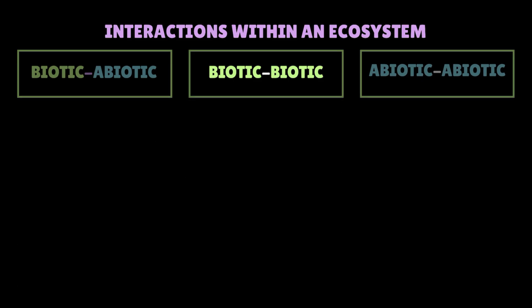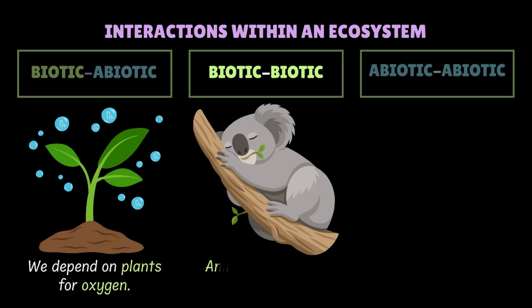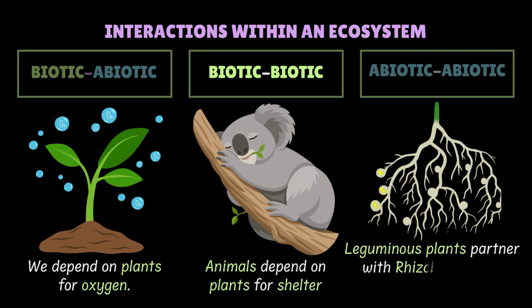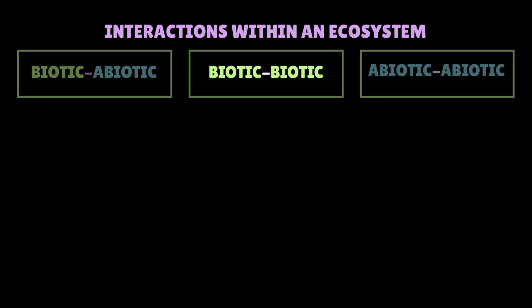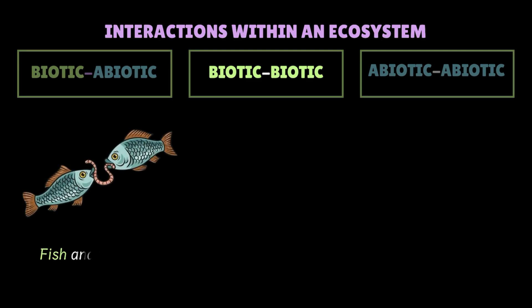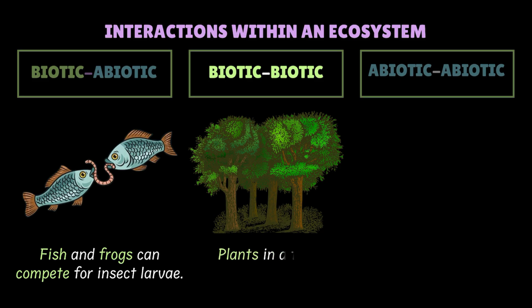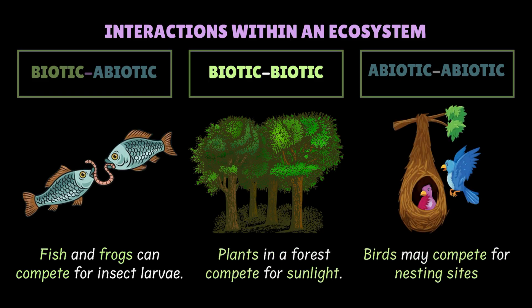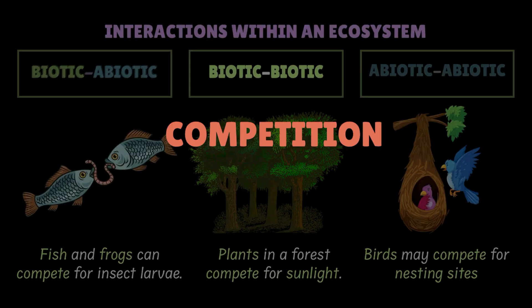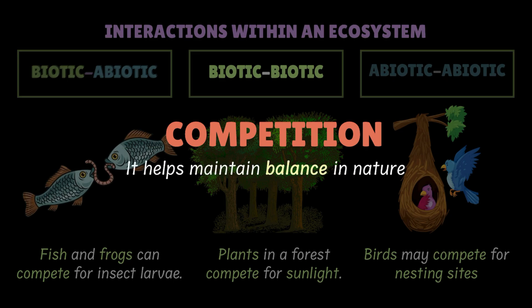Organisms don't just depend on each other for food. We depend on plants for oxygen. Animals depend on plants for shelter. Some leguminous plants partner with bacteria called rhizobium to help fix atmospheric nitrogen. Not all interactions are about helping each other — sometimes they compete too. Fishes compete for insect larvae, plants in a forest compete for sunlight, and birds may compete for nesting sites on the same tree. Competition is actually healthy; it helps maintain balance by preventing any one population from exploding.